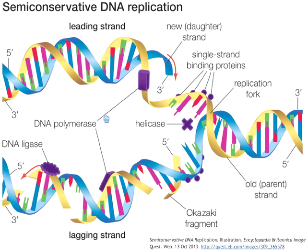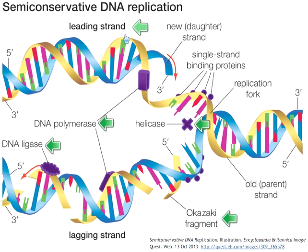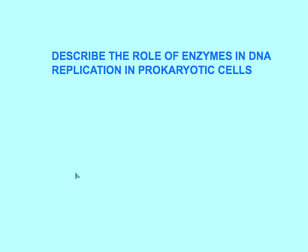Let's summarize this semi-conservative replication of DNA in prokaryotic cells. A good way to do this is to pay attention to the major enzymes and what they do. In addition to these major enzymes, there are the Okazaki fragments, the leading strand — whose copy happens in the 5' to 3' direction — and the lagging strand, upon which several fragments are connected. Finally, describe the role of enzymes in DNA replication in prokaryotic cells.